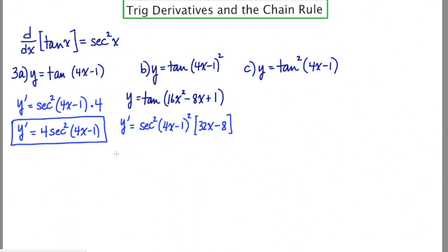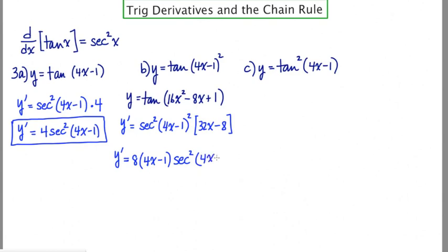Let's figure out the final expression of this answer. I'm going to factor out an 8 since it's common to both terms. When I take the 8 out, I'm left with (4x − 1), and then secant squared of (4x − 1) squared.